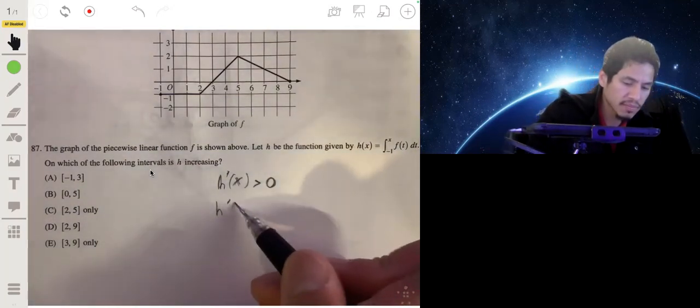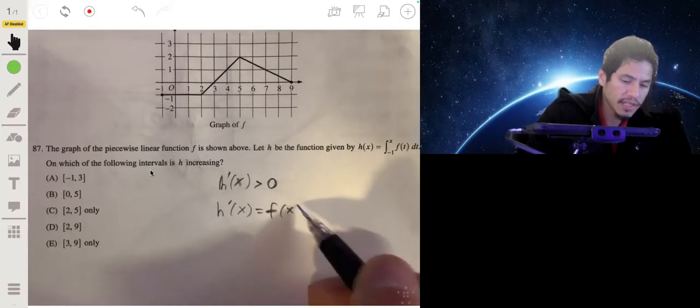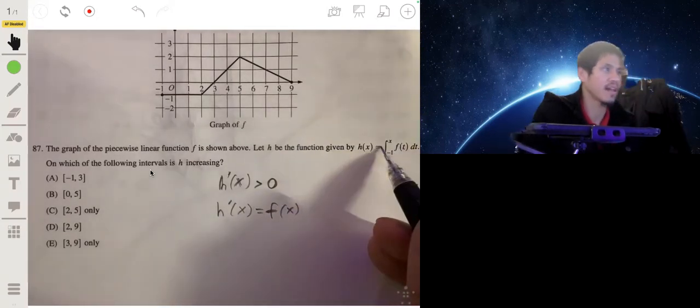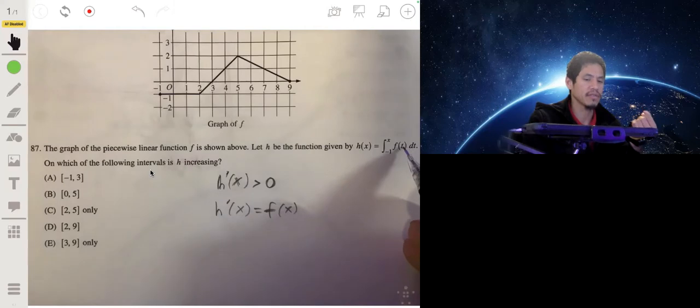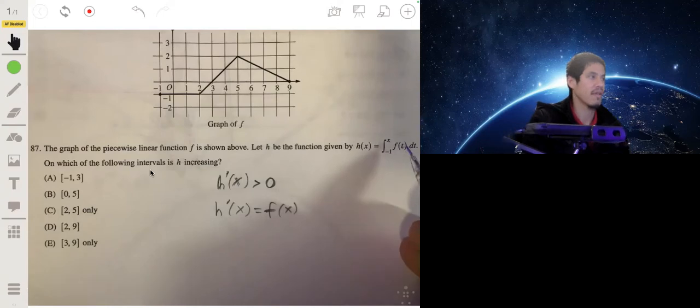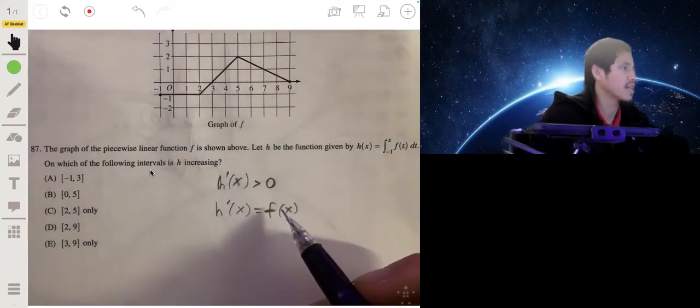So what happens is h prime of x becomes f of x. And again, they just use t there, and it's kind of like a substitute. That t still represents some values of x, but putting that x there can be confusing because then you would think it always has to be whatever that value is. Anyways, so then we just look for where is f of x positive.